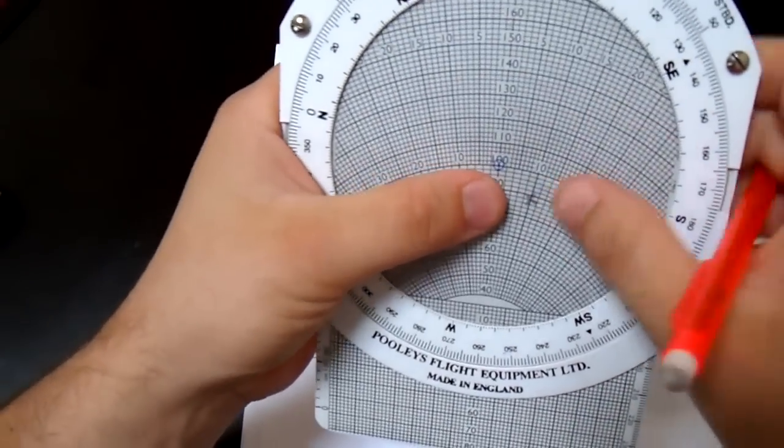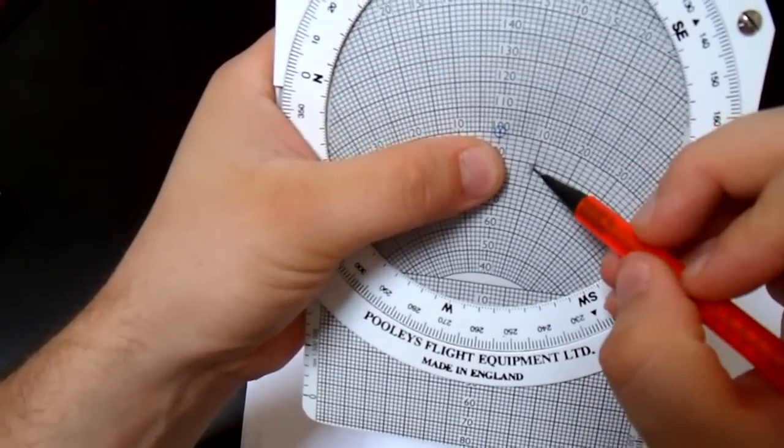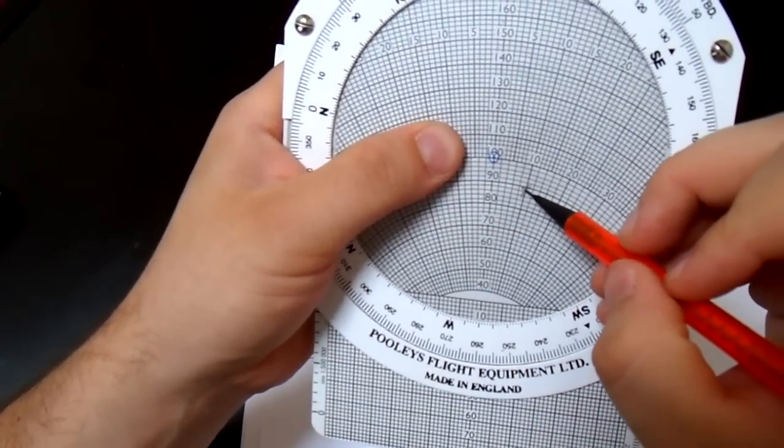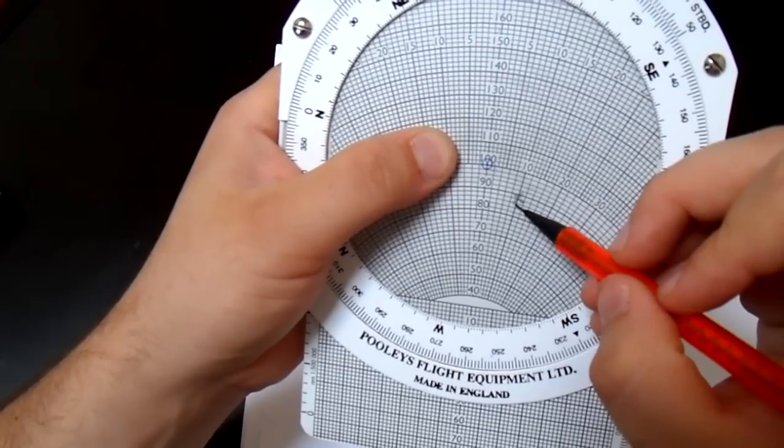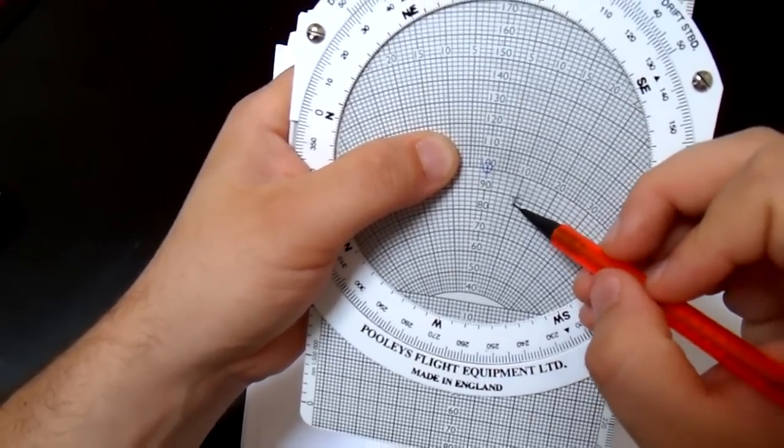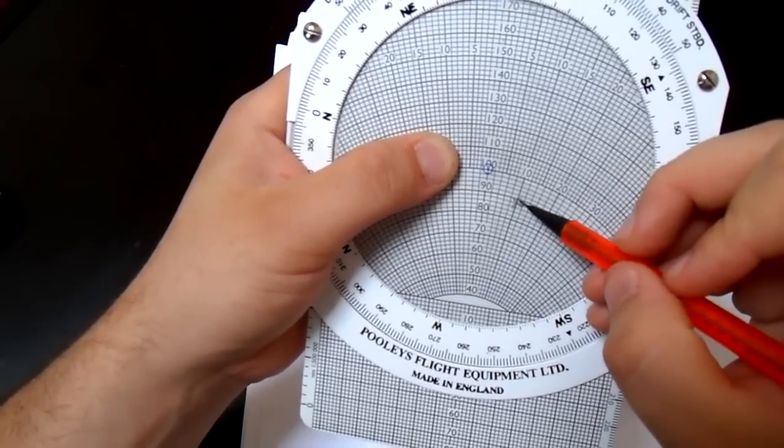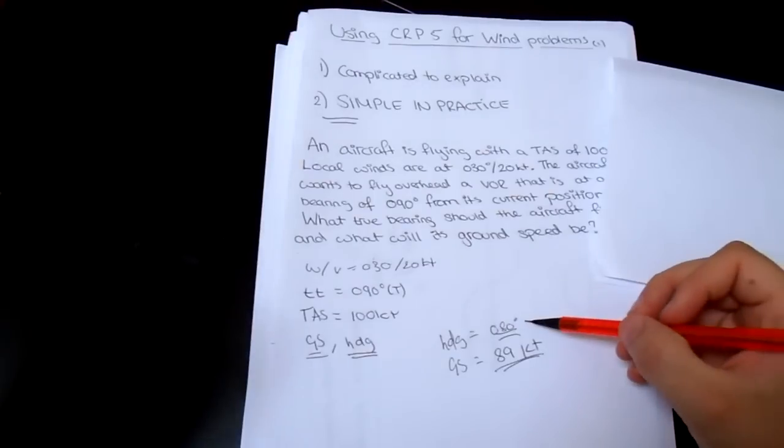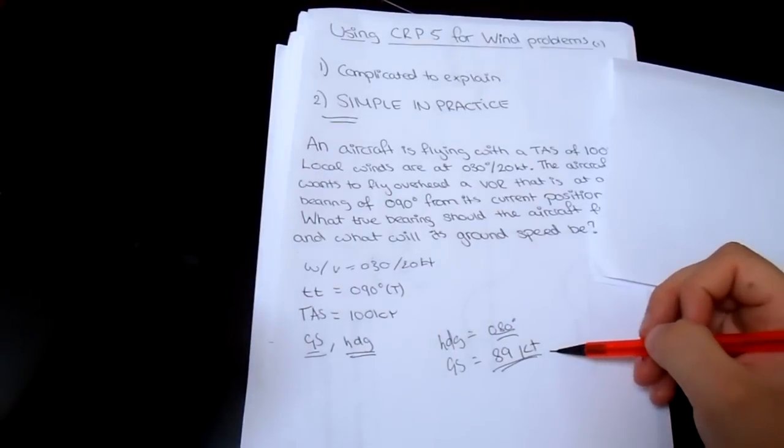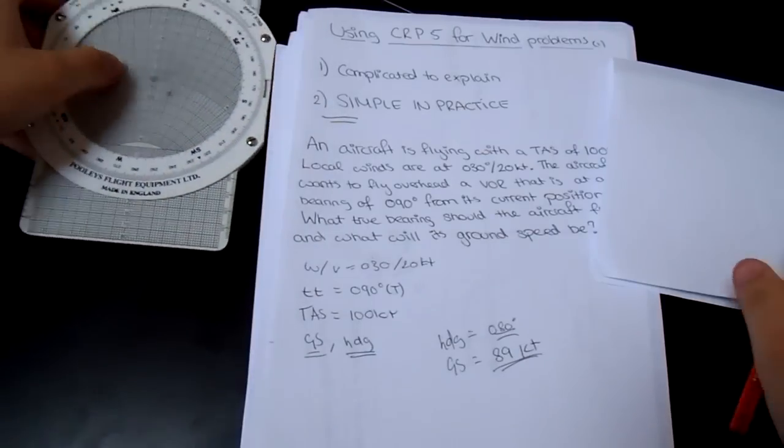Now, to find the ground speed, it's even easier, because now we've finished doing that. We're going to look at the cross and we're going to see what airspeed it's at. So it's at 80, 82, 84, 86, 88, about 89 knots, because it's between the 88 and the 90 line, so it's 89 knots. So the answer is 080 degrees and 89 knots. Done. And it's the question answered.